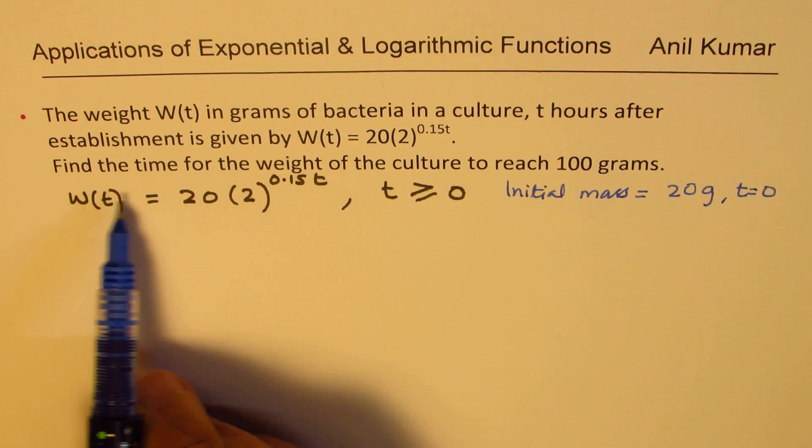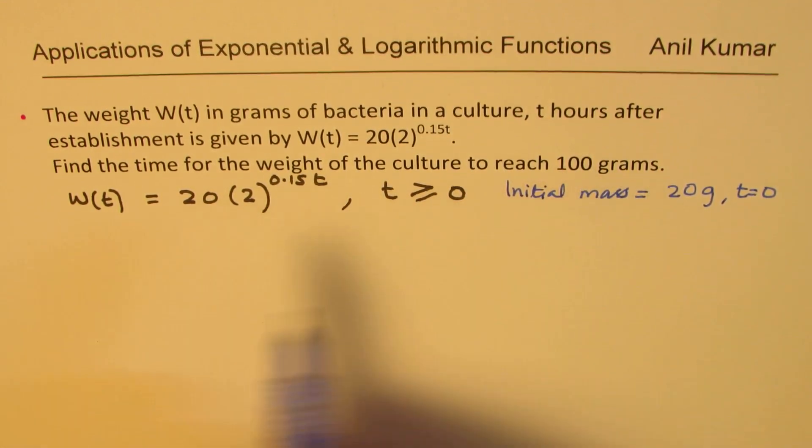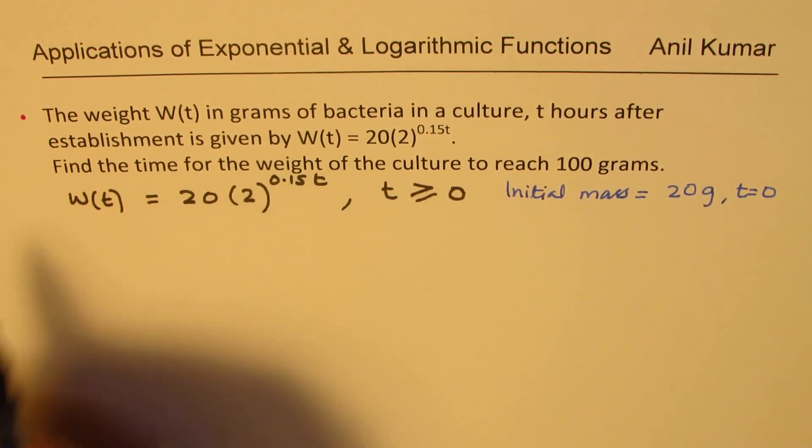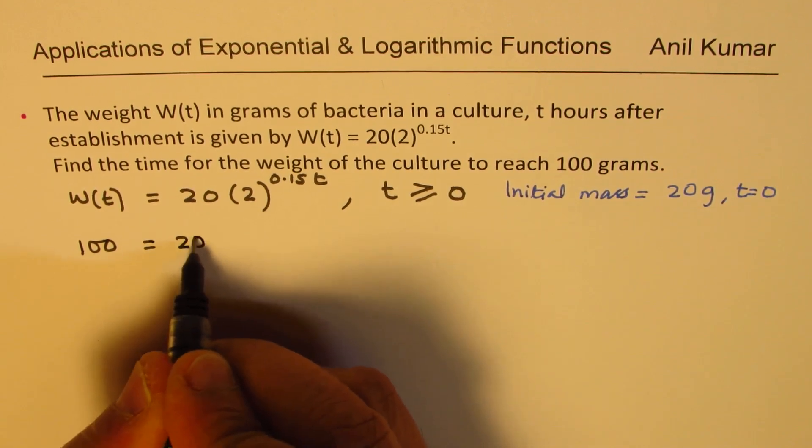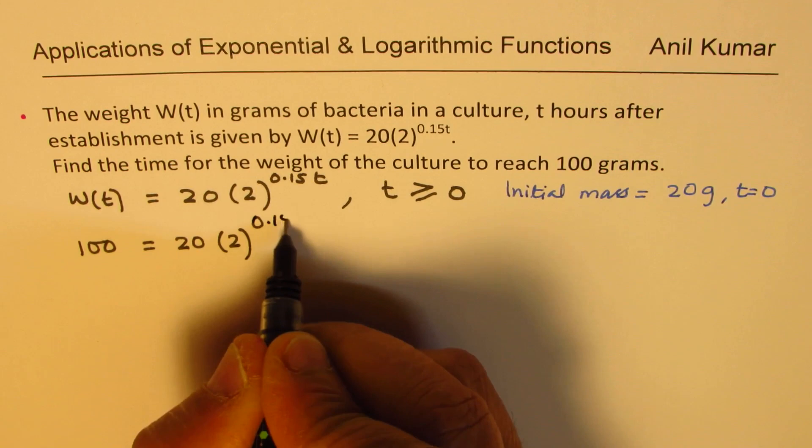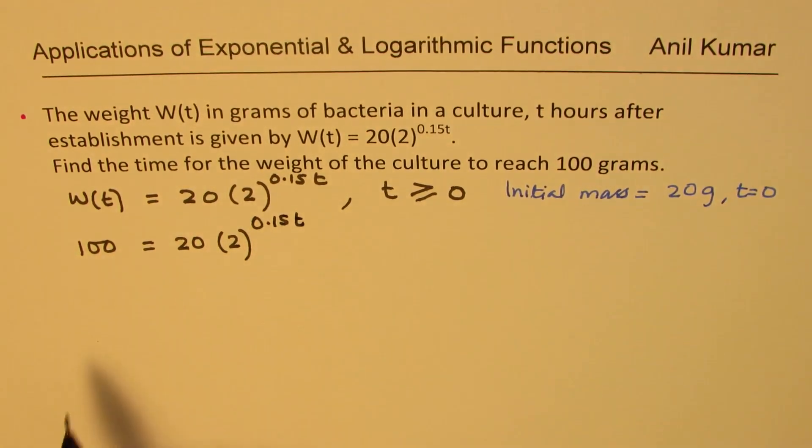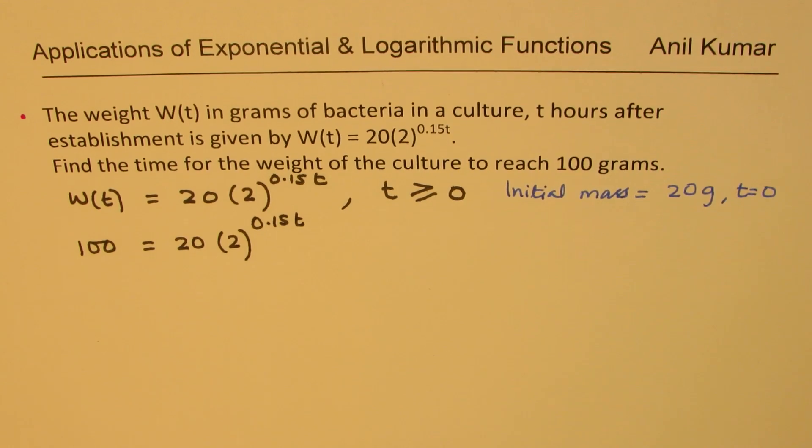The question is: find the time for the weight of the culture to reach 100 grams. So we need to find this time t when the weight becomes 100 grams. So 100 equals 20 times 2 to the power of 0.15t. How do we solve for this t which is in the exponent?